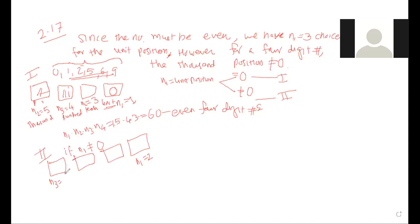None of the six arrangements are repeated. Using the multiplication rule: n1 = 3 choices for the first position (A, B, or C), n2 = 2 choices for the second position, and n3 = 1 choice for the third. So n1 × n2 × n3 = 3 × 2 × 1 = 6 permutations. We could arrive at 6 without listing all arrangements.